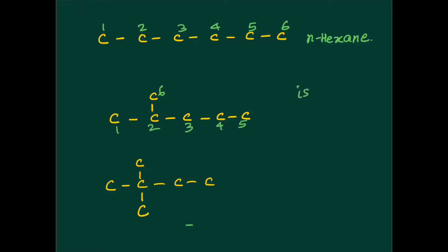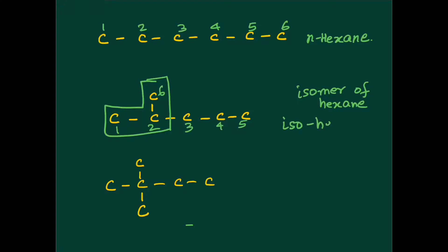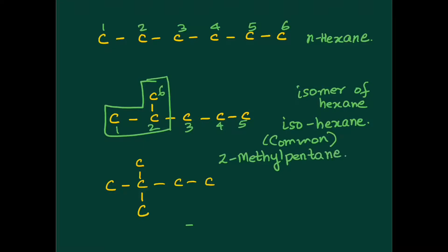It's an isomer of hexane with one branch at the second last carbon — this is also called isohexane. Again, I repeat, this is in the common system. How would you name it in the IUPAC system? This would be called 2-methylpentane. The IUPAC system is much easier than the common system used earlier.